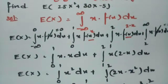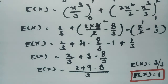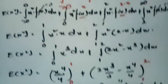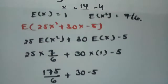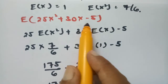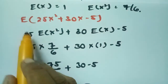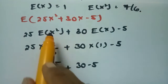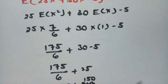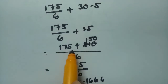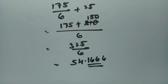So this is how we solve this problem. First find E(x) equals 1, then find E(x²) equals 7/6, then substitute into E(25x² + 30x minus 5) to get 325 divided by 6, which equals 54.166. Thank you so much — have a look at my next video and share it with your friends.